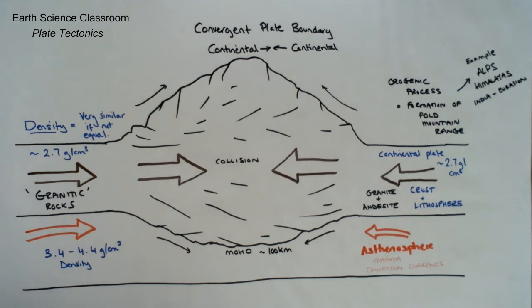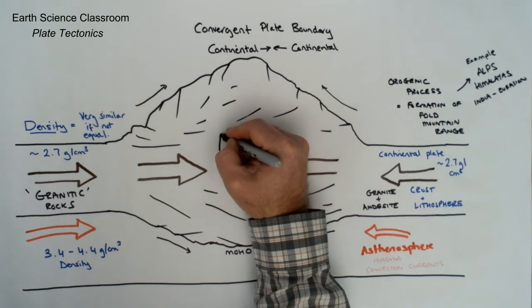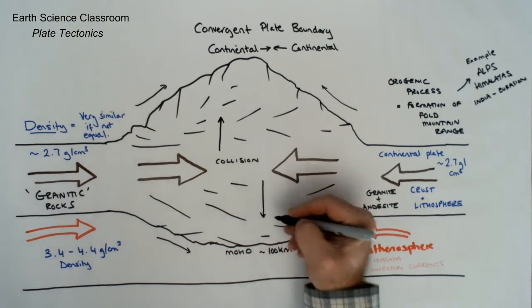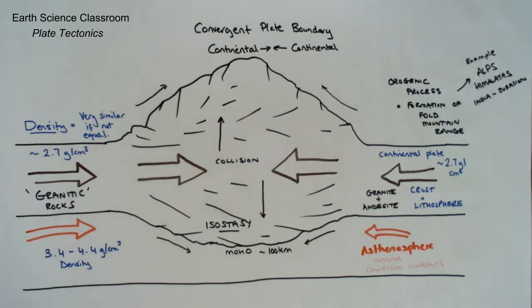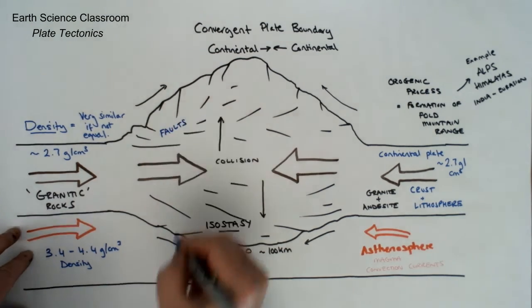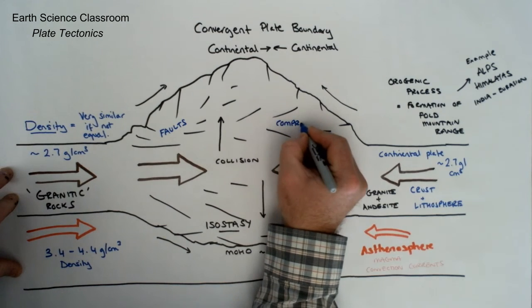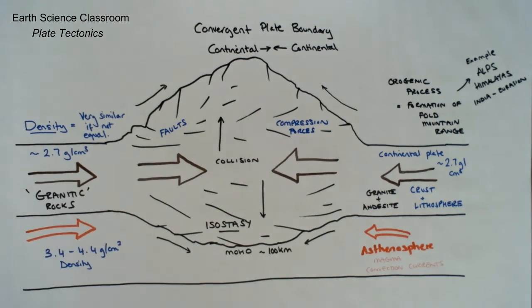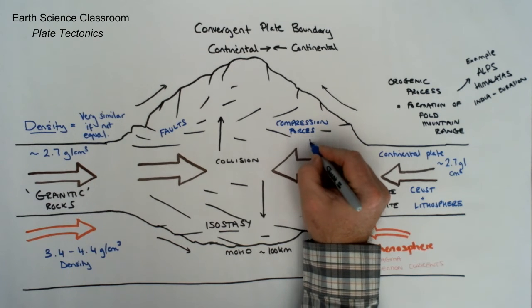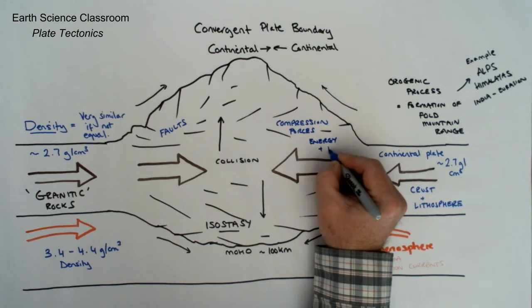Here you see the Moho which is the separating boundary between the plate and the below asthenosphere with the change in velocity of earthquake waves. You have this deeper section of around 100 kilometers max before it goes into the asthenosphere.